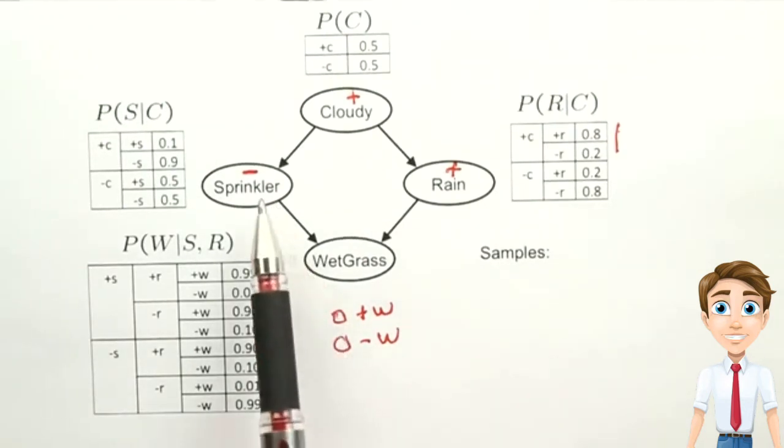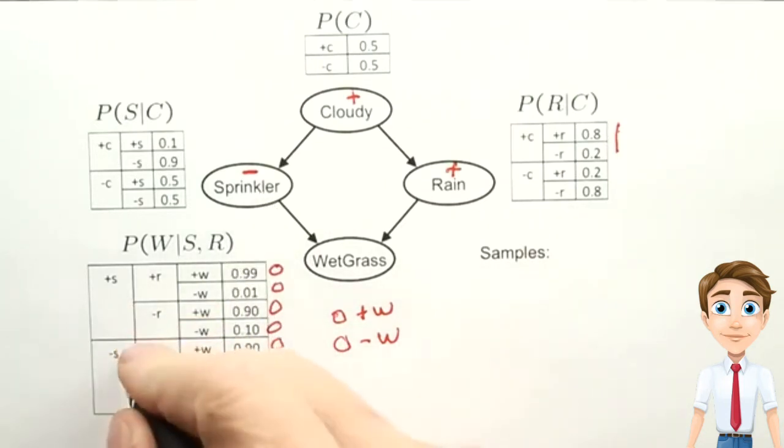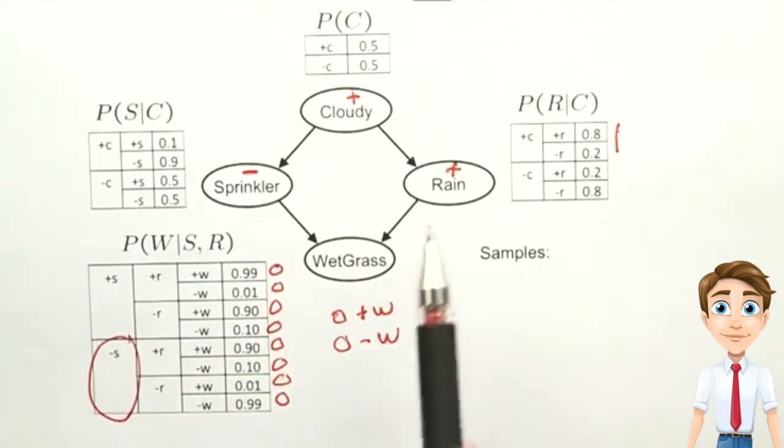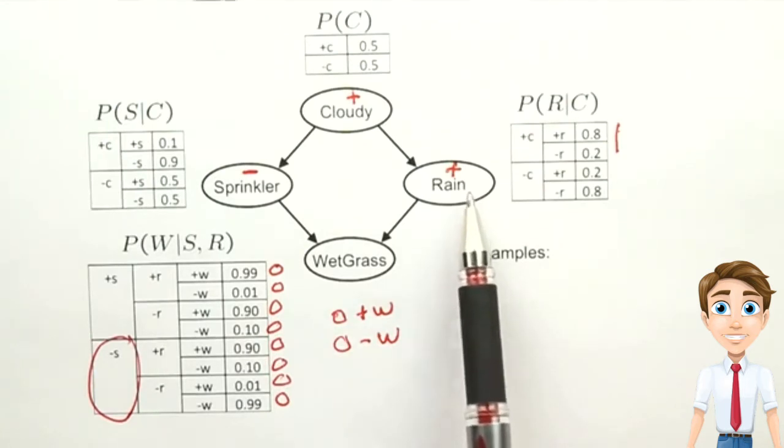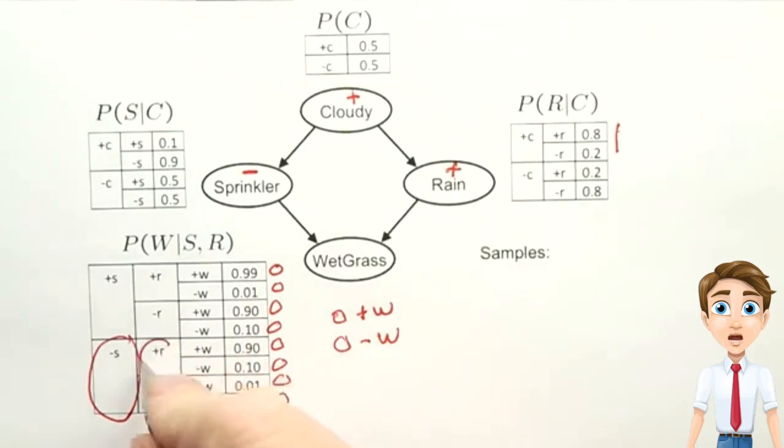The answer to the question is that we look at the parents. We find that the sprinkler variable is negative, so we're looking at this part of the table. And the rain variable is positive, so we're looking at this part. So it would be these two rows that we would consider. And thus we find there's a 0.9 probability for W, the grass being wet, and only 0.1 for it being negative. So the positive is more likely.